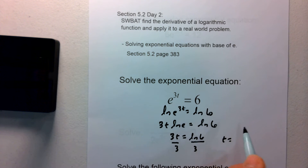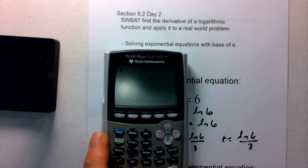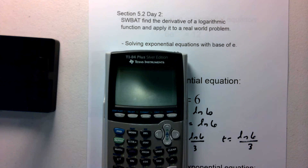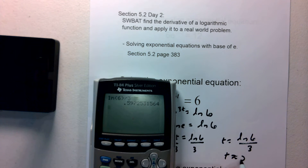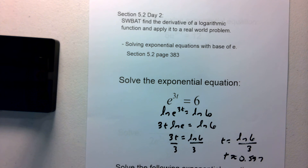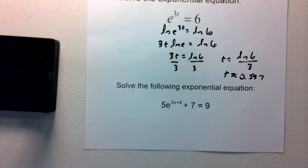So t, the exact value, is going to be the natural log of 6 divided by 3. We can get an approximation by putting it into our calculator — natural log of 6, close your parenthesis, then divide by 3. That gives us t is approximately 0.597. We'd like to go out three decimal places for future classwork.